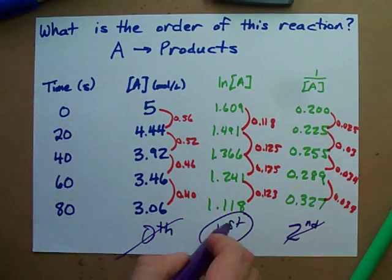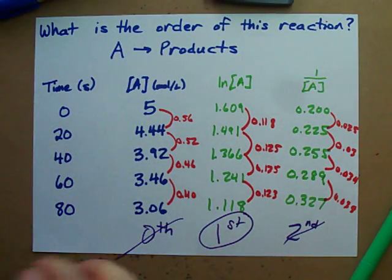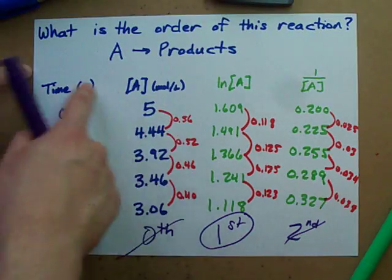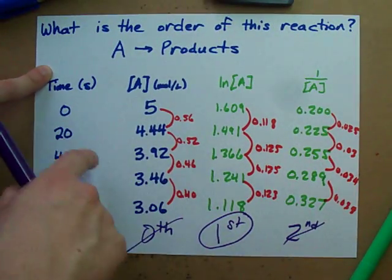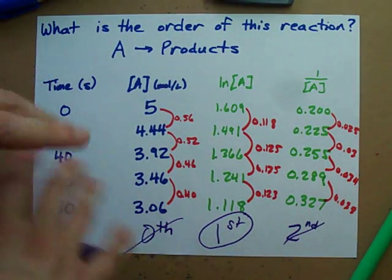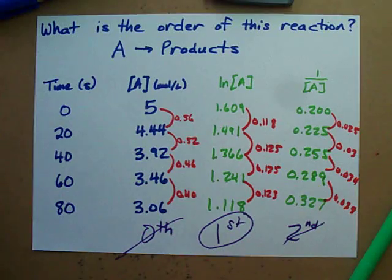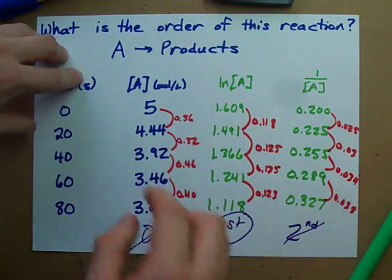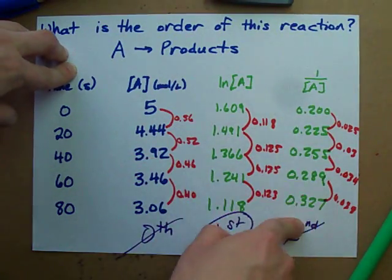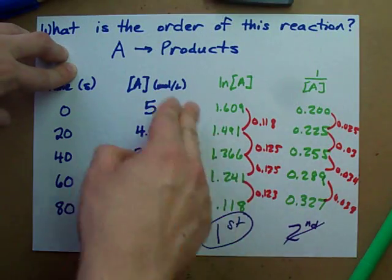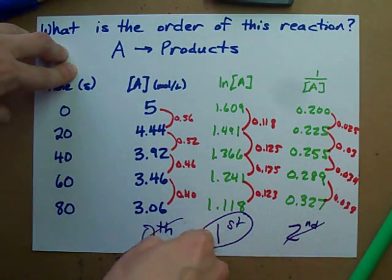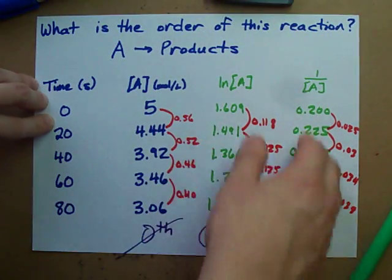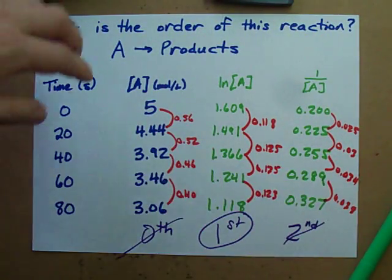Knowing that it's first order, you can use that information to find the rate constant and many other things about the reaction. So just add two columns — ln[A] and 1/[A] — find the first differences, and whichever set is constant tells you the order: zero, first, or second. Best of luck.